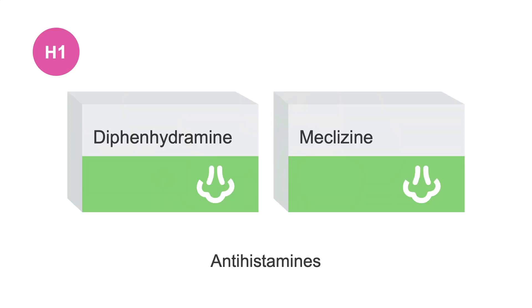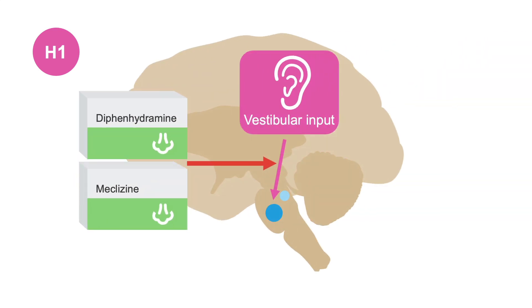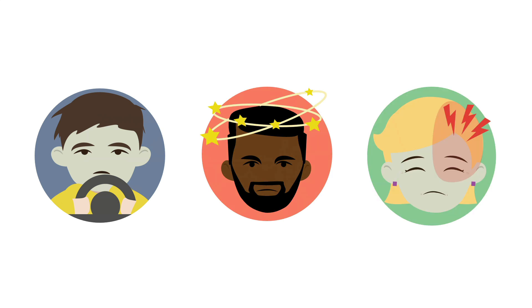Next, we have antihistamines like diphenhydramine and meclizine. These also target vestibular input, so are best for treatment of motion sickness, vertigo, and migraine-induced nausea.